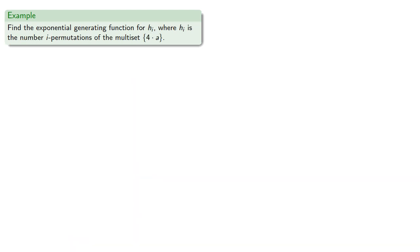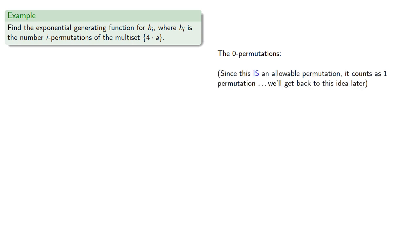Let's try something a little more complicated: the exponential generating function for h_i, where h_i is the number of i-permutations of the multiset consisting of four a's. The zero permutation — there's just one, which is nothing at all. An important idea for later on: since this is an allowable permutation, it counts as one permutation.